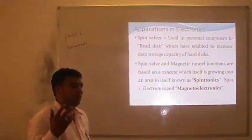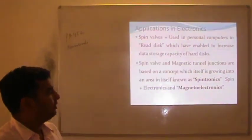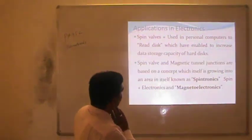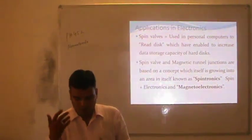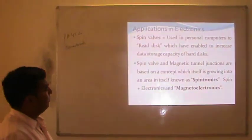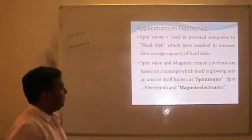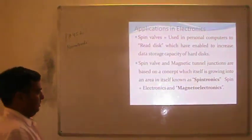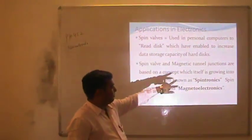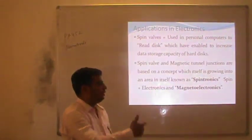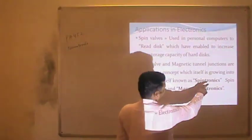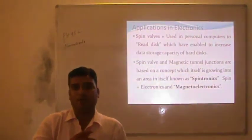Spin valves are simply based on spintronics. The spin valve is used in personal computers to read disks, which helped to increase the capacity of the hard disk. The spin valve and magnetic tunnel junctions are based on the concept which is going into an area of spintronics — spin plus electronics — and magneto-electronics. This is the new frontier of electronics where we look for properties based on the spin and magnetic properties of the spin.